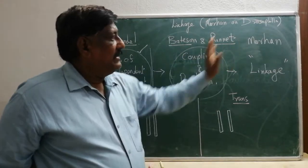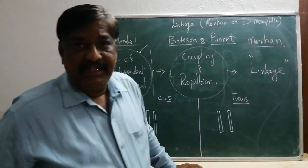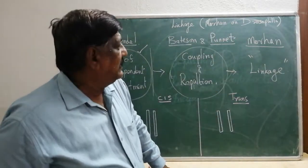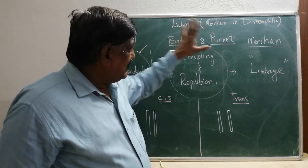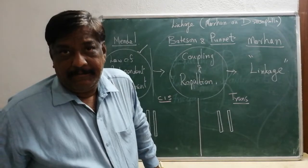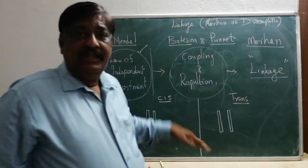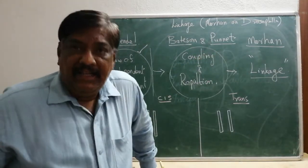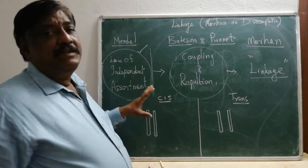Later, Morgan did the experiment again on Drosophila, a fruit fly. He did the same experiment but did not use the words coupling and repulsion. He used the term linkage. That is why it became familiar, and from then on we call it linkage.